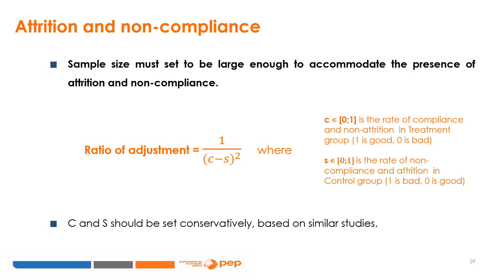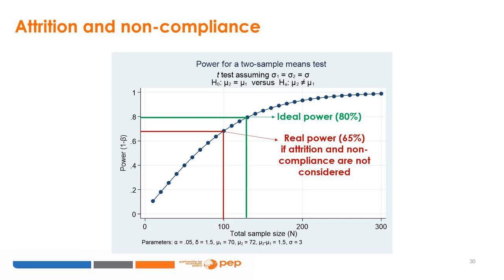To avoid the loss of power, sample size must be set large enough to accommodate attrition and non-compliance. Calculations based on a zero attrition and non-compliance scenario are unrealistic and must be adjusted by a ratio where C and S are the rates of compliance and non-compliance in the control and treatment groups respectively — these should be set conservatively based on similar studies. This plot shows the required sample size to preserve an ideal level of power of 80%. If sample size calculations do not consider attrition and non-compliance, the experiment will be powered at a lower level, increasing the chances of not finding an effect even when the effect exists.